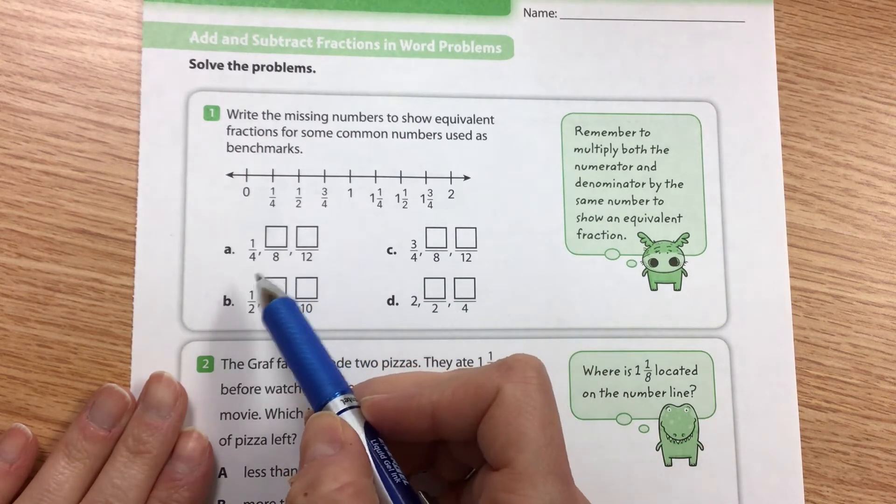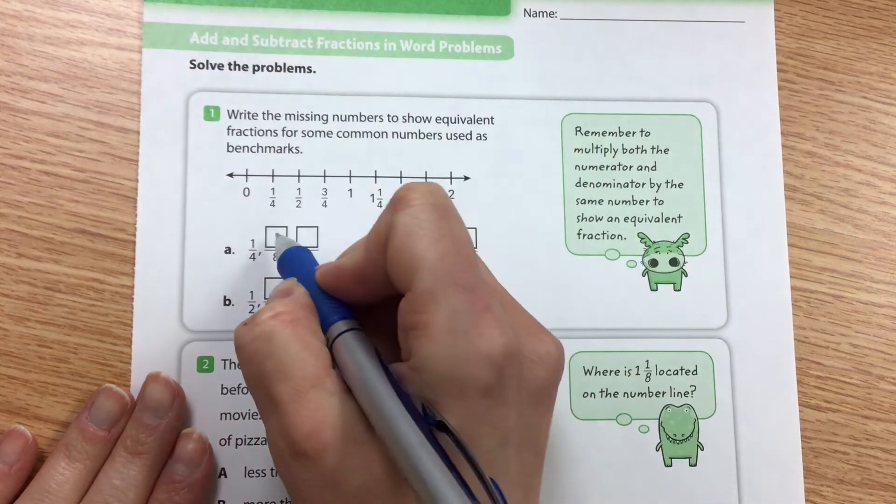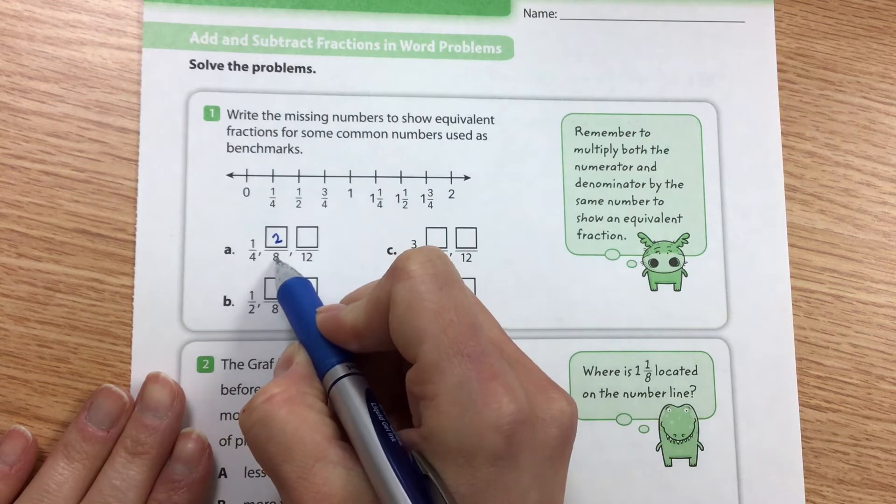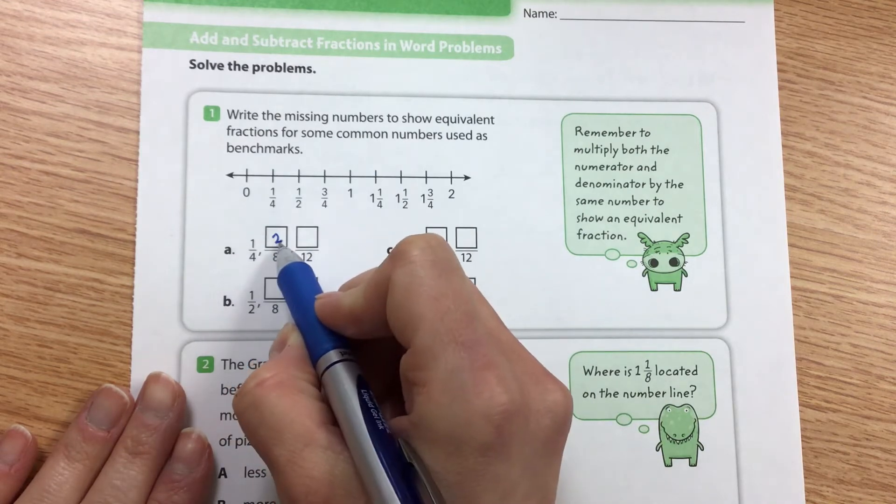So remember these are equivalent fractions. One fourth is equal or equivalent to two eighths. Remember what are we doing to four to turn it into eight? We're multiplying it by two so we're doing the same thing to our numerator. One times two is two.